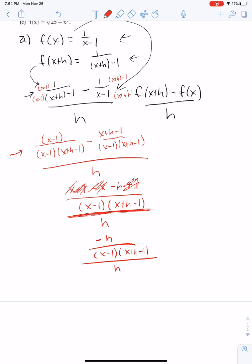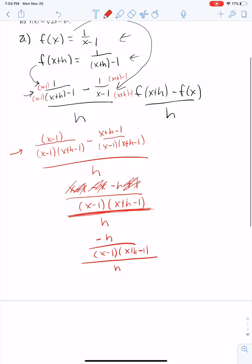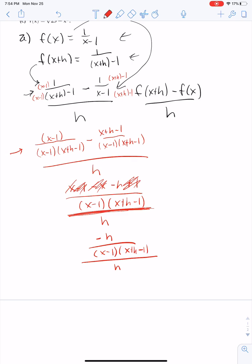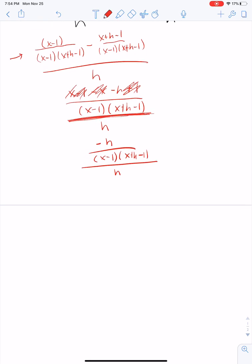Which means I need to take the numerator and multiply it by the reciprocal of h, which is 1 over h. So I have negative h over x minus 1 times x plus h minus 1, times 1 over h. Well, I can cancel that common factor. I'm left with negative 1 over x minus 1 times x plus h minus 1. And now h is no longer a factor in the denominator.